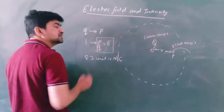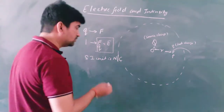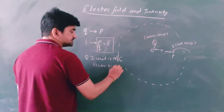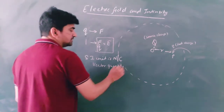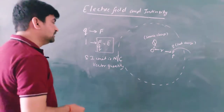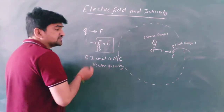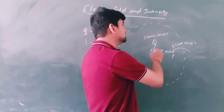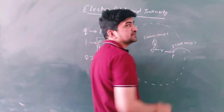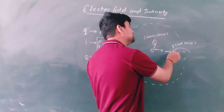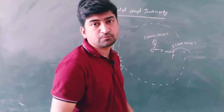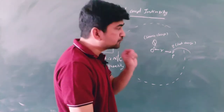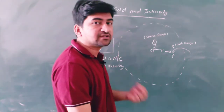Since force is a vector quantity, electric field intensity is also a vector quantity. Now, what is the direction? The direction of the force experienced by the test charge gives the direction of the electric field. This source charge produces the electric field, and if you place a positive test charge at a point, the direction of force on it gives you the direction of the electric field.